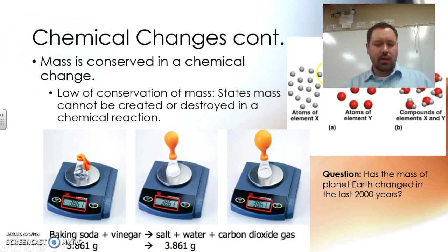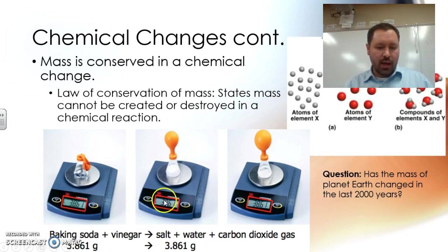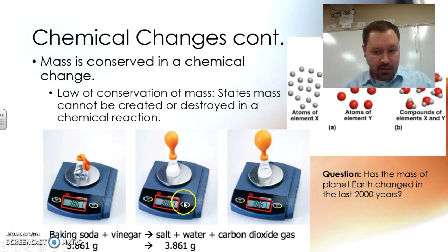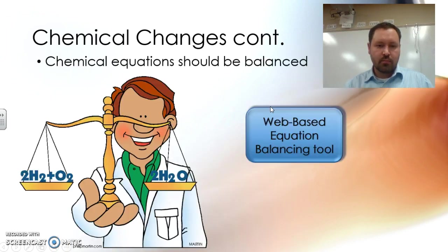Here's another diagram to show what we're talking about. There's baking soda in this balloon and vinegar in this Erlenmeyer flask. Then we mix them together. Notice the mass — it's 38.61 grams. Once they're reacting, it's still 38.61 grams. And after the reaction, it's still 38.61 grams. We did not add mass and we did not take away mass. That's impossible — that's against the law of conservation of mass.